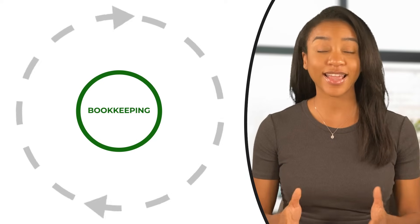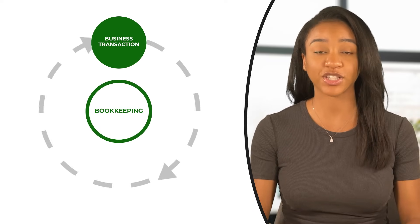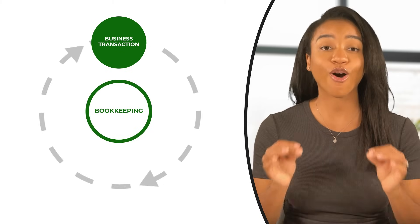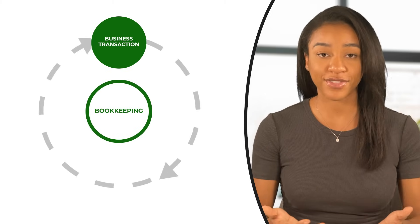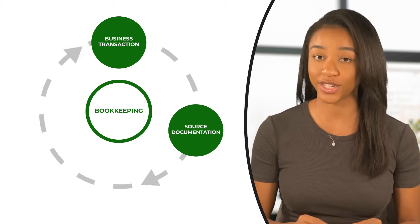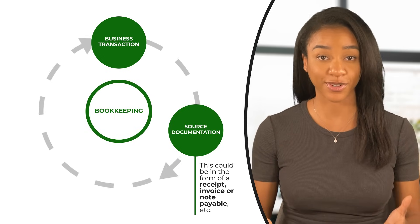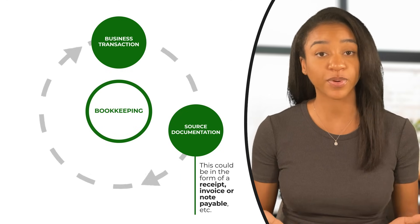So you understand what bookkeeping is and why it is important — but how does it work? Answering this question will be the perfect segue into the QuickBooks training. Think of bookkeeping as a cycle. It first starts with a business transaction. Whether you are receiving or spending money, all financial transactions impact your bookkeeping. As a result of a business transaction, there should be some type of source documentation — this could be in the form of a receipt, invoice, or note payable. Source documentation is used to record transactions in QuickBooks.